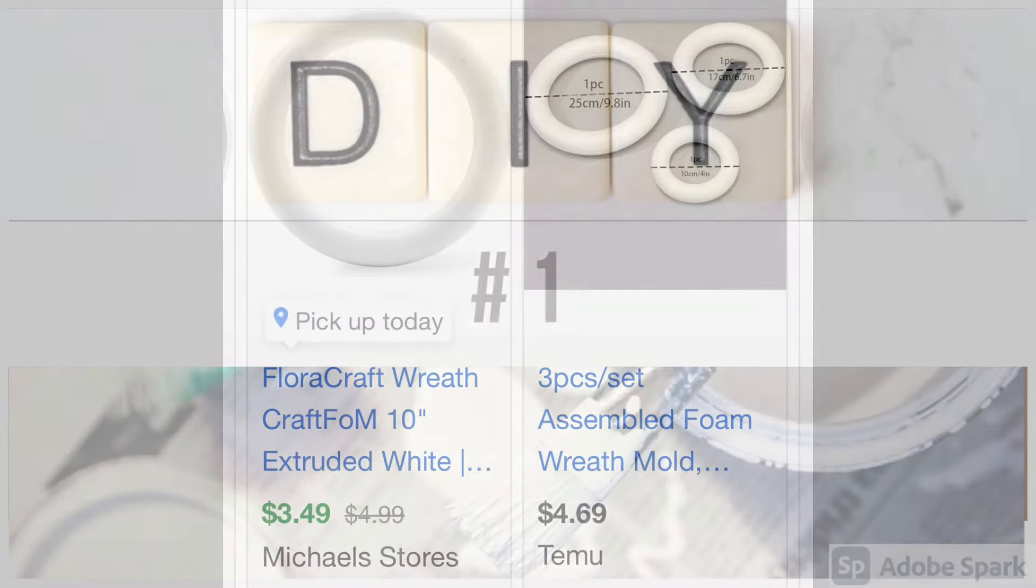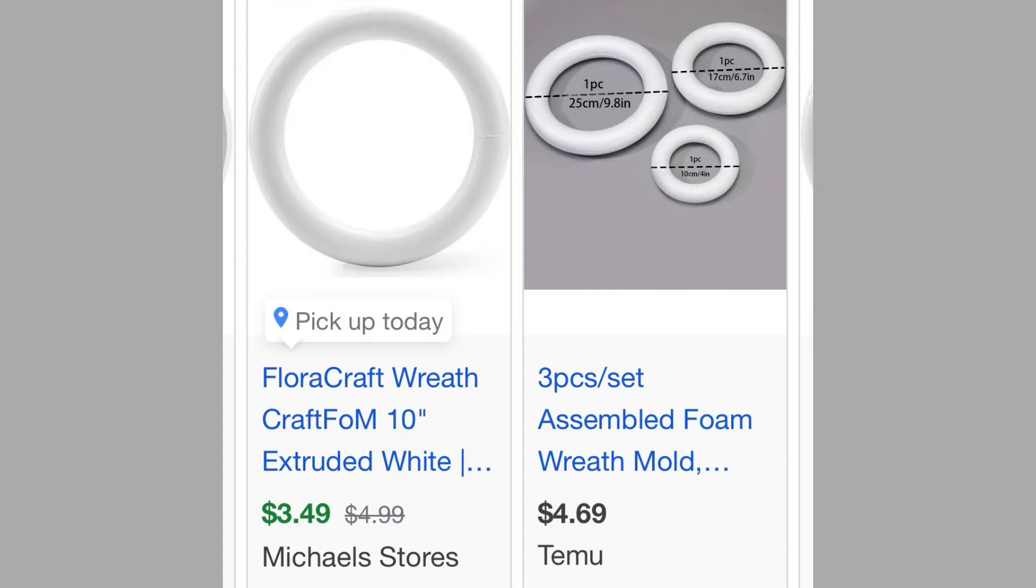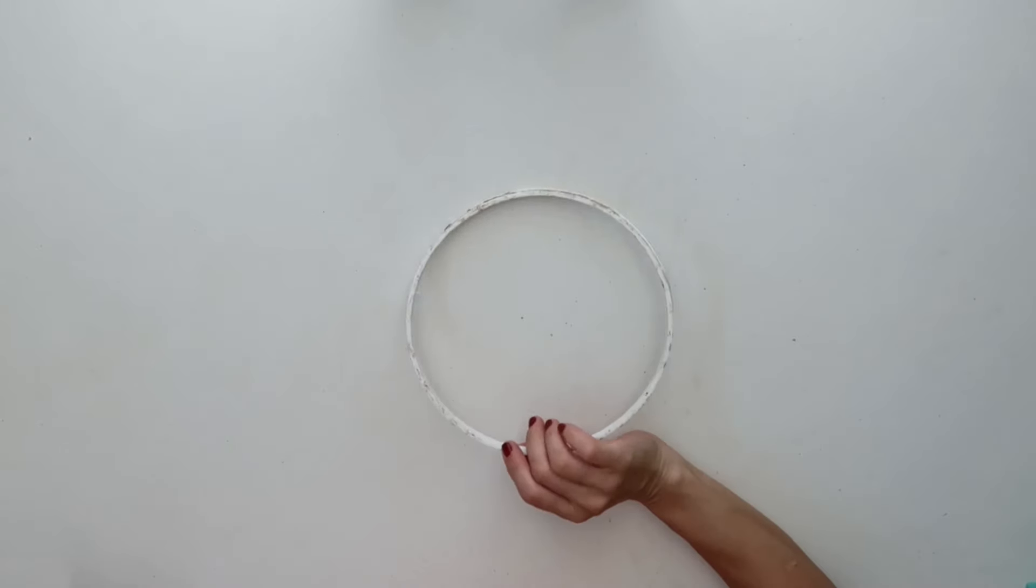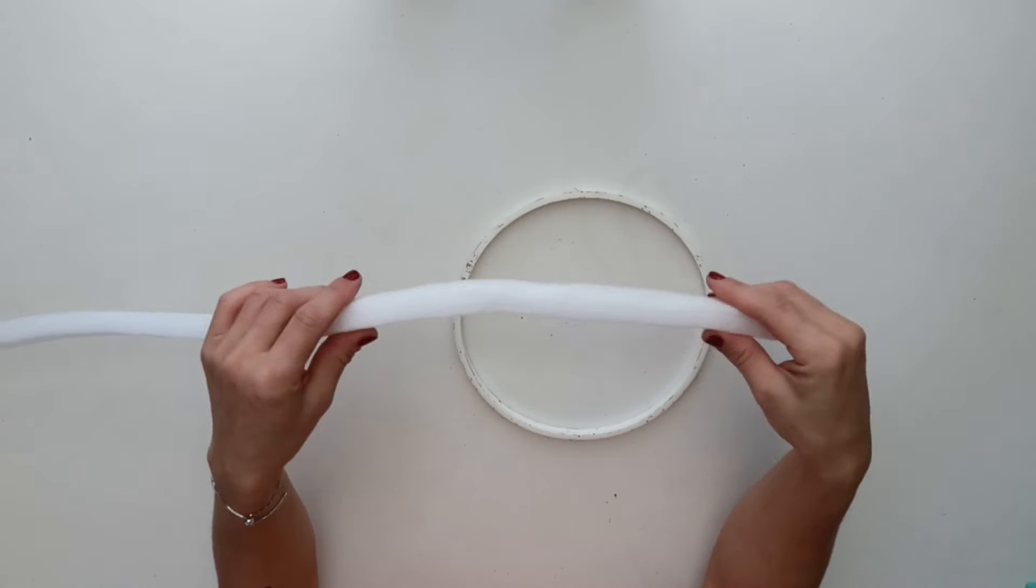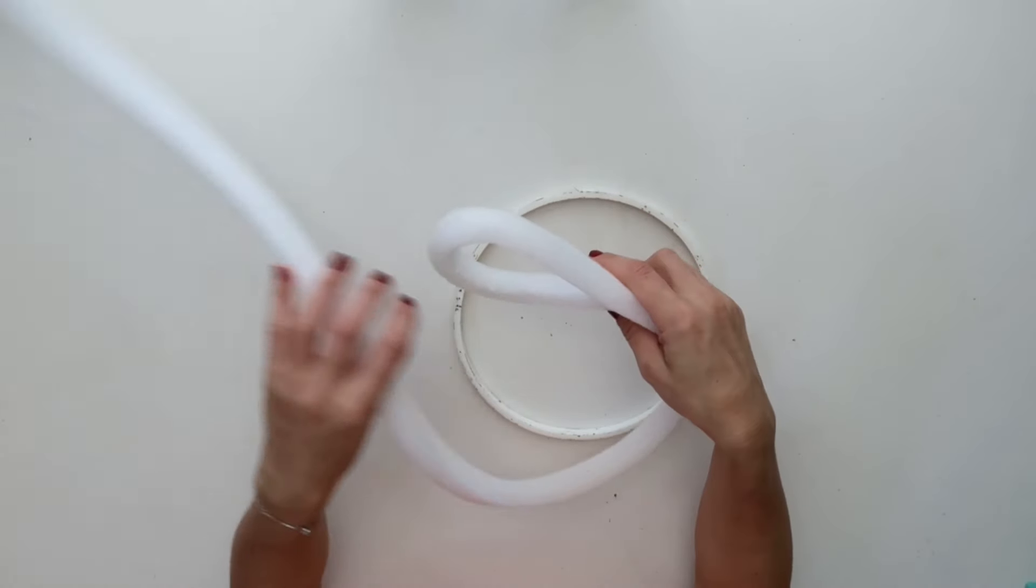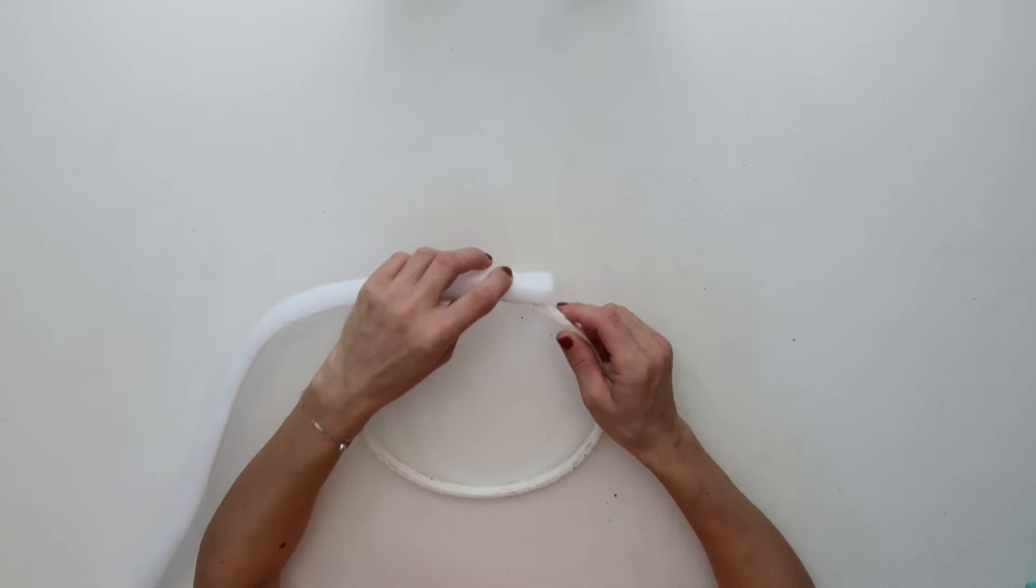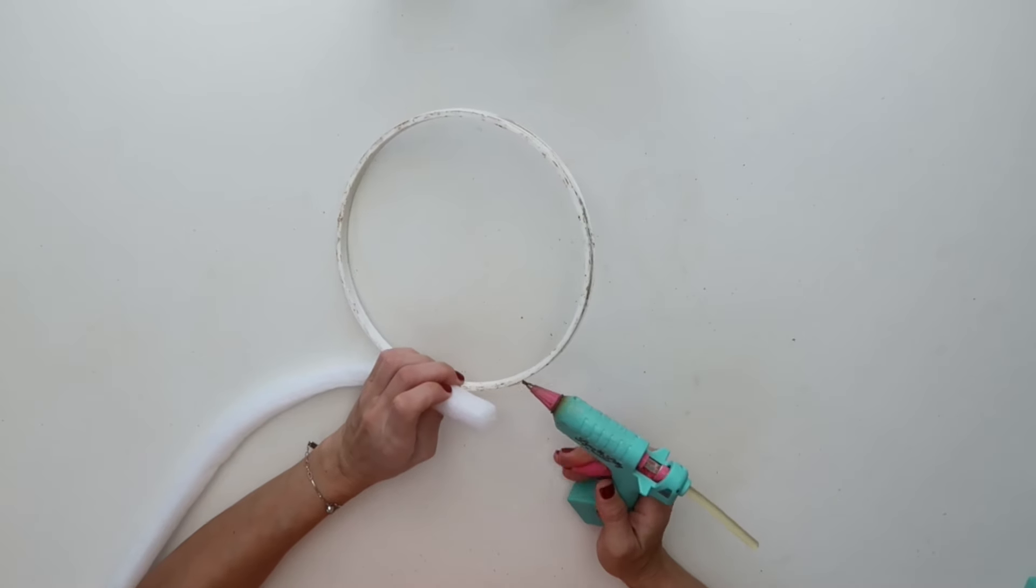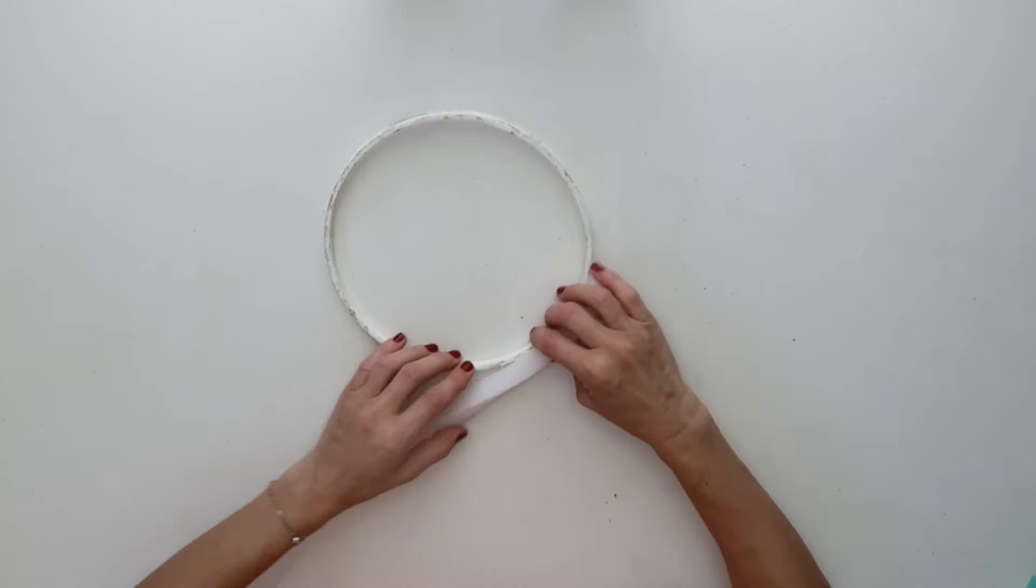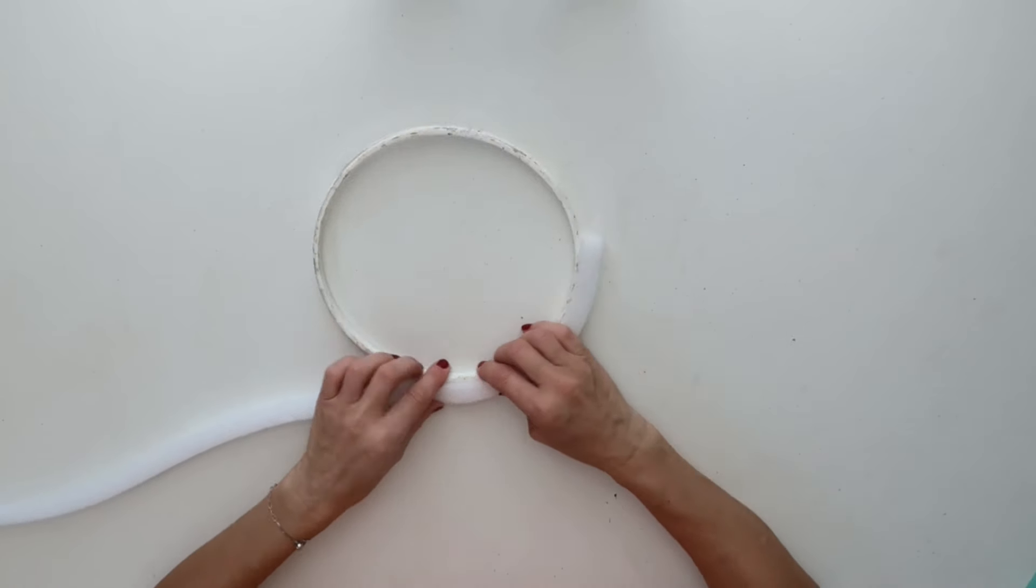For this first project I wanted to take one of these foam wreaths the Dollar Tree sells or you can find in any craft store, but I did not have any at the moment. So I took one of these embroidery hoops, plastic ones that I had at home, and also this is from some packaging that I saved.